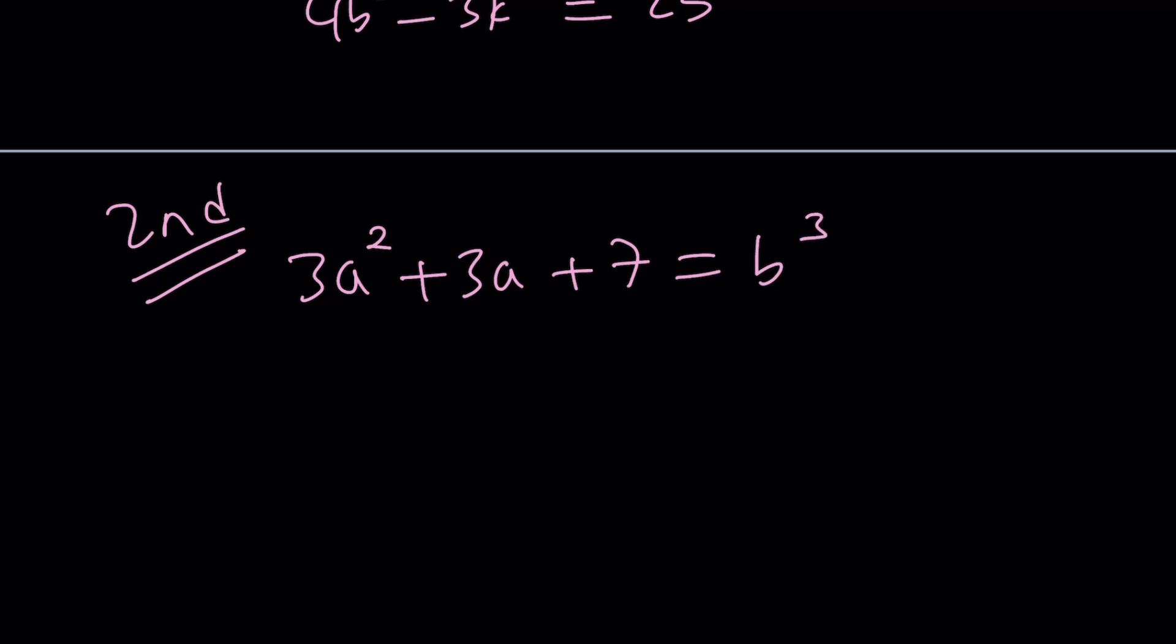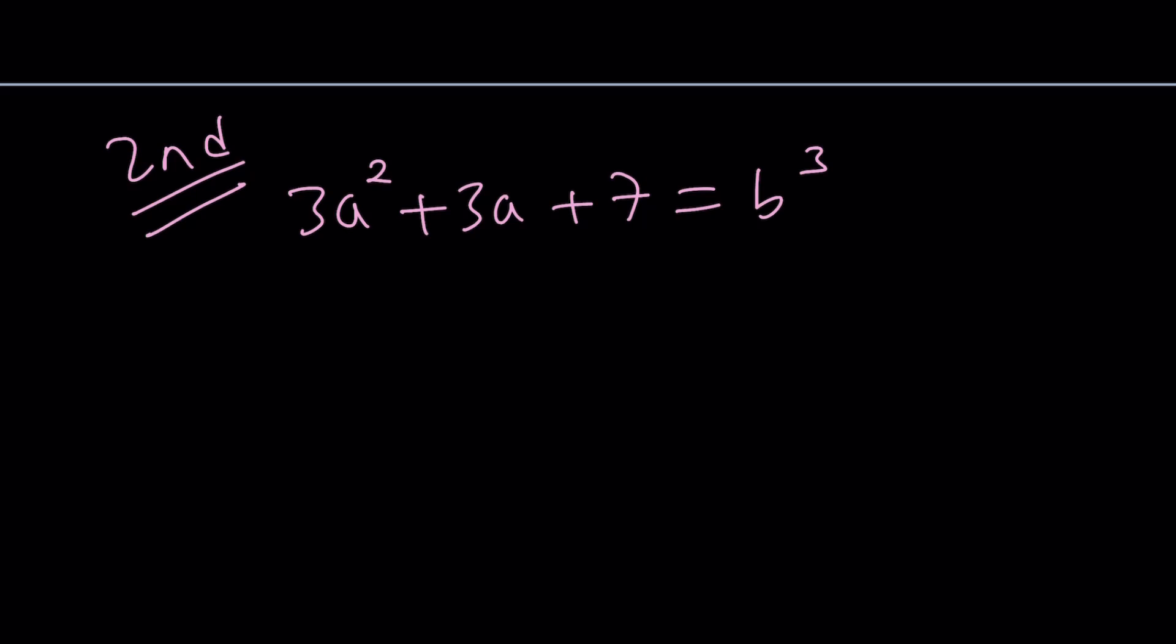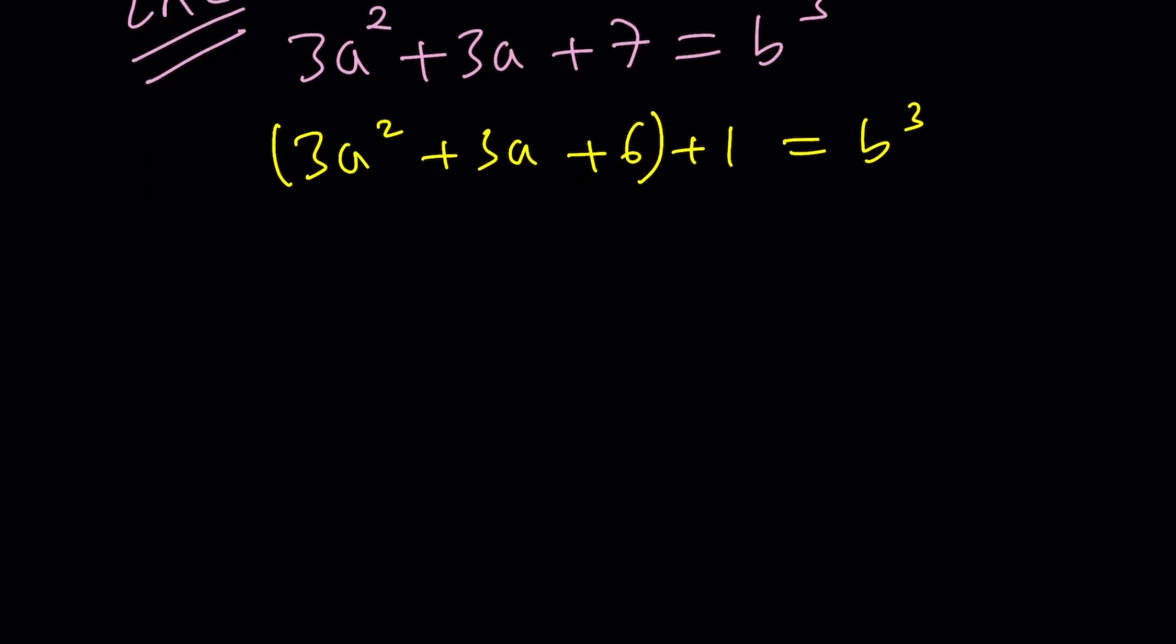The first thing I want you to notice is, if I can split up the 1 and write this as 3a² + 3a + 6 + 1, not only is this going to be a multiple of 3, but also when I subtract 1 from b³, it's going to be factorable. So that's really nice. We're making both sides factorable by doing this. So let's go ahead and do that.